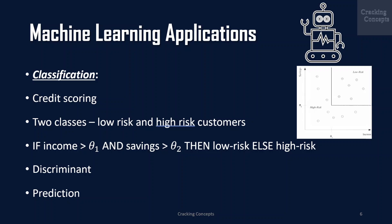From this data of a particular application, the aim is to infer a general rule coding the association between the customer's attributes and his risk. The machine learning system fits a model to the past data to be able to calculate the risk for a new application and then decide to accept or refuse it accordingly. This is an example of a classification problem where there are two classes: low risk and high risk customers. The information about a customer makes up the input to the classifier, whose task is to assign the input to one of the two classes.